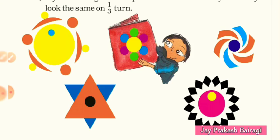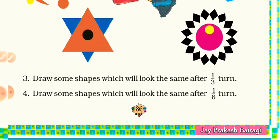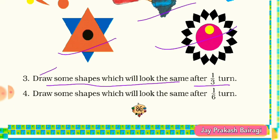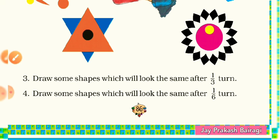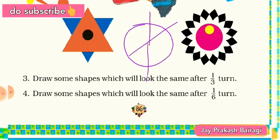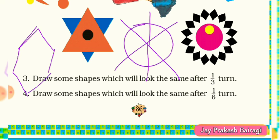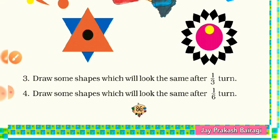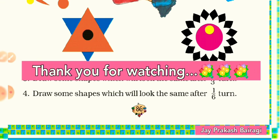So in this way we have changed the shapes to make them look the same in one third turn. Now we have the last two questions. Question 3: draw some shapes which will look the same after one third turn — you can use the pictures from earlier for reference. Question 4: draw some shapes which will look the same after one sixth turn — you can make a circle and color it, since in each one sixth turn it looks the same, and also you can make a hexagon, which also looks the same in each one sixth turn. Today's class is over and this lesson is also complete. See you all in the next video — till then, stay at home, be healthy, bye bye.